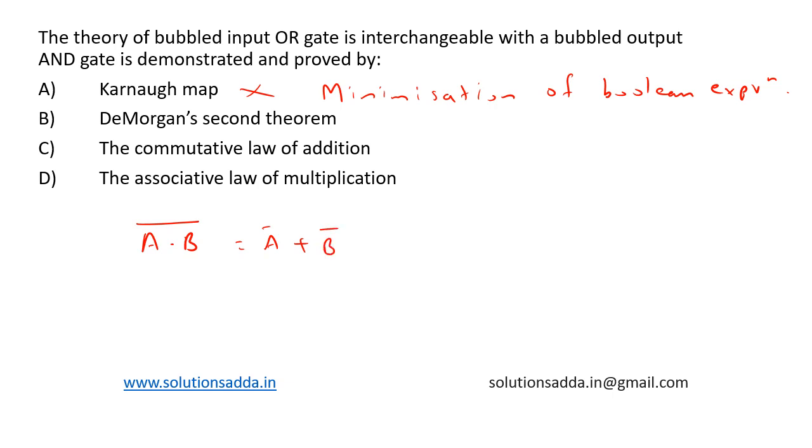This is equivalent to what is being mentioned in the statement: the theory of bubbled input OR gate. This input is interchangeable with bubbled output AND gate. This is what De Morgan's law states, or De Morgan's second theorem states. So this can be represented like this.